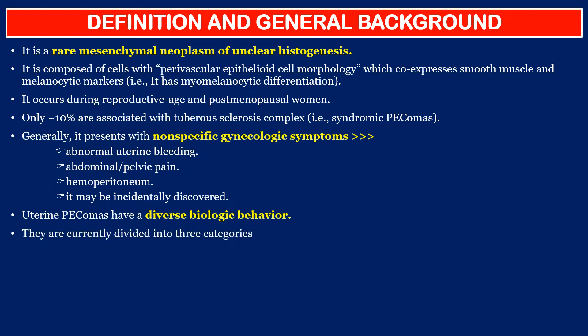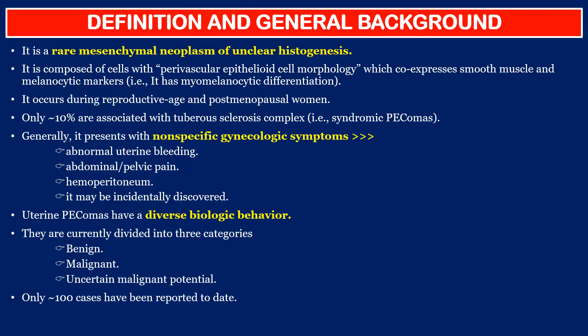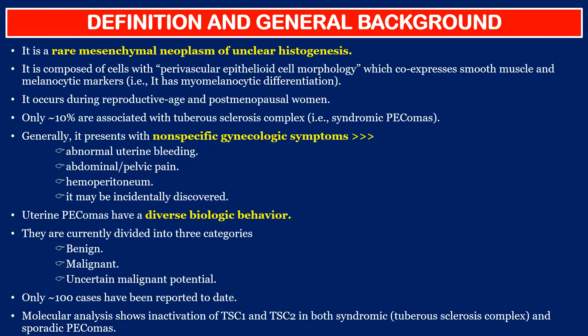They are currently divided into three categories: benign, malignant, and uncertain malignant potential. Only approximately 100 cases have been reported to date. Molecular analysis shows inactivation of TSC1 and TSC2 in both syndromic tuberous sclerosis complex and sporadic PEComas.